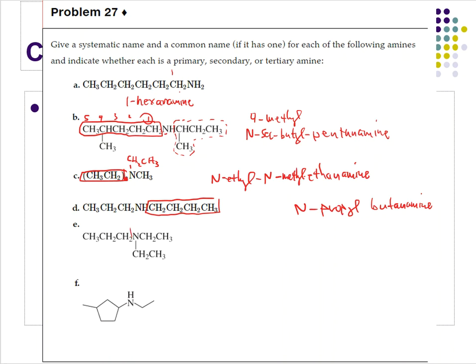For E, the longest carbon chain is three carbons, so this is propane — drop the E, add amine: propanamine. On the nitrogen I have two of the same group, an ethyl group, so this is N,N-diethylpropanamine.